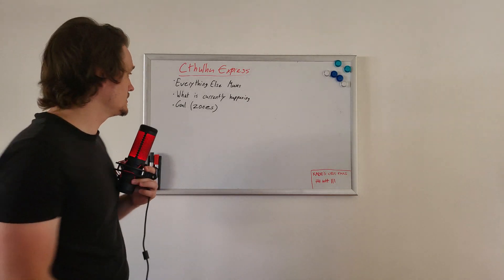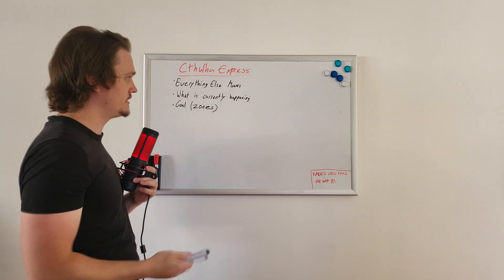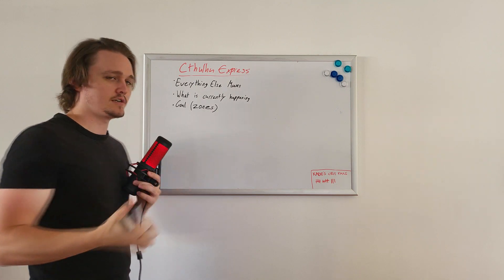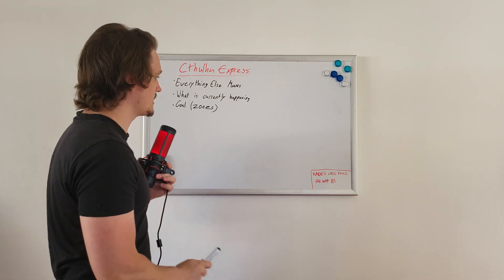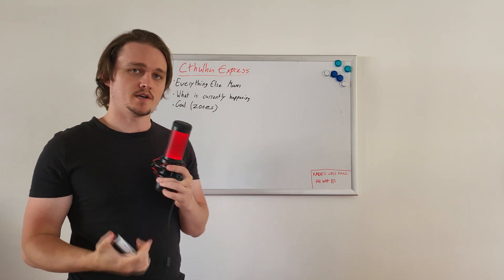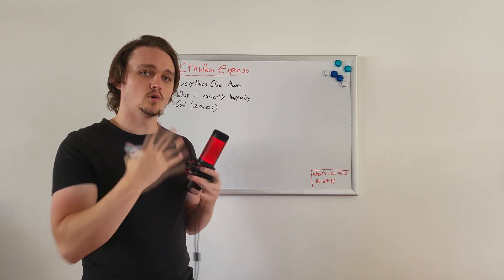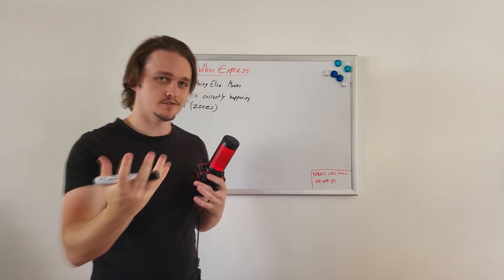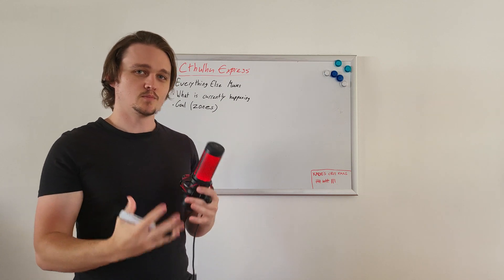So these are the things I want to go through — essentially my thought patterns. First up is that everything else moves. I've already kind of briefed on this in the past, but I want to go into more detail now and the reasoning behind my thinking. The train itself will always be in world space at 0, 0, 0. It will never move. It will stay as put. There are two main reasons for this.